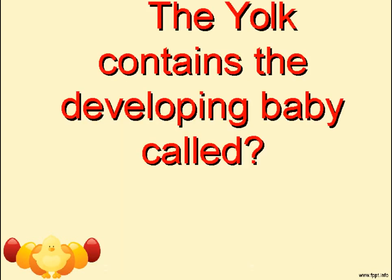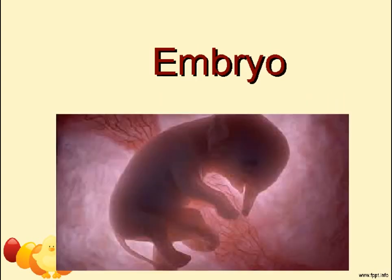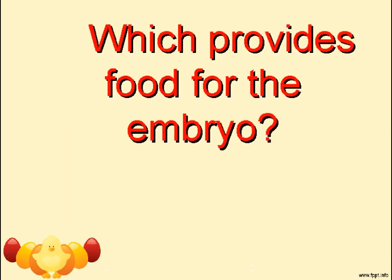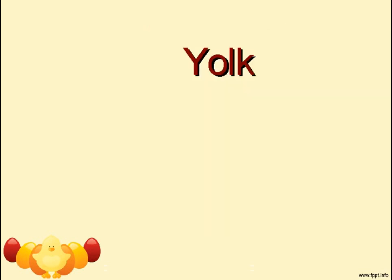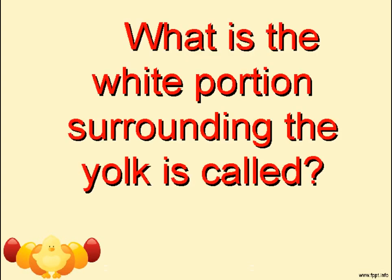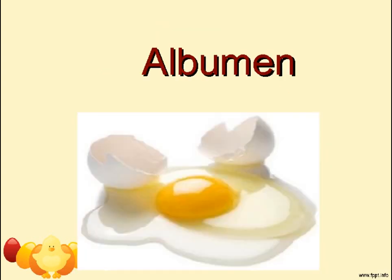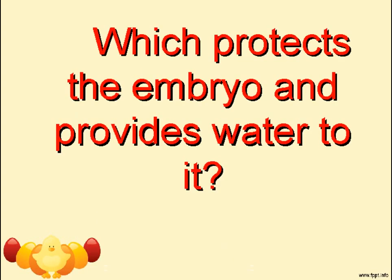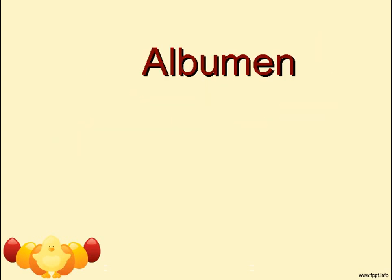The yolk contains the developing baby called the embryo. The yolk provides food for the embryo. The white portion surrounding the yolk is called albumin. Albumin protects the embryo and provides water to it.